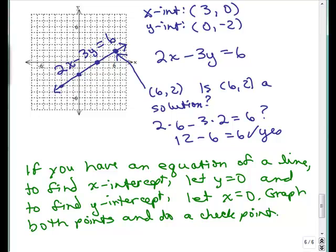By checkpoint, my checkpoint was 6, 2 up here. I have to make sure that another point that it went through was really a solution to the equation.